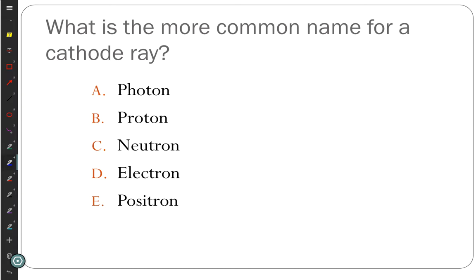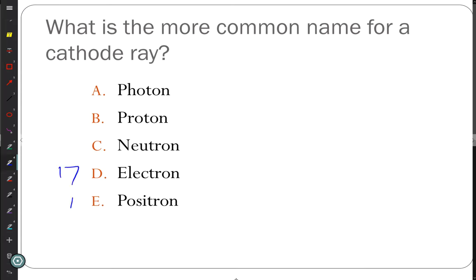Clicker question: what is the more common name for the cathode ray? Some answered 'positron' — a positron is actually the antimatter of an electron. The correct answer, chosen by 17 people, was electron. The things coming out of the cathode were determined to be just electrons.